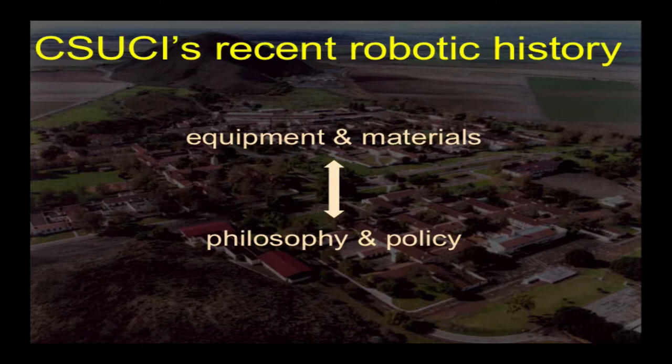There are two parts you'd need if you're thinking about doing some elements of this. One is the actual physical equipment — the parts and the units themselves. But you also need a supportive educational philosophy and, in some cases, some policies. They really feed back on each other, so you don't necessarily have to start in one place or the other, but they both help. The key step for most folks seems to be getting their very first piece of equipment.